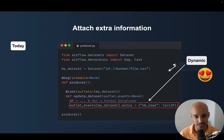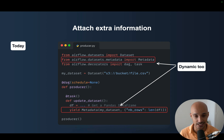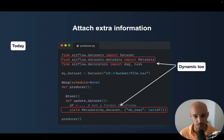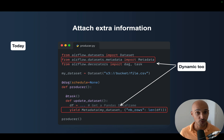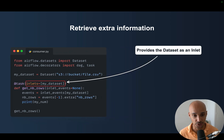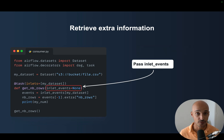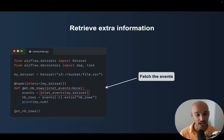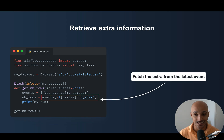You can also do this using the metadata method, as we saw earlier with dataset aliases — you yield the metadata with your dataset and pass the extra information at runtime. To retrieve this information from another task, you use the inlets parameter and pass the dataset to it. Then as a parameter of your task, you use the inlet events from the Airflow context. Once you have the inlet events, you can refer to your dataset and access the extra information from the latest event — from the latest dataset that triggered this data pipeline.